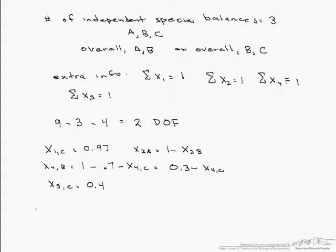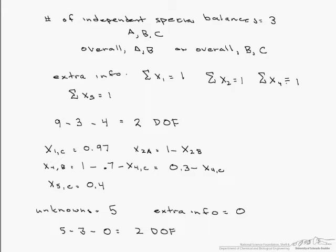So the number of unknowns has become 5. Does this mean that the number of degrees of freedom have changed? And the answer is no because we have used our 4 pieces of extra information. So we have 0 of those. So now we have 5 minus 3 minus 0 still equals 2 degrees of freedom.